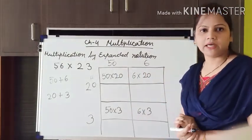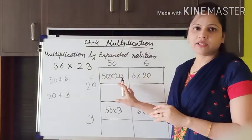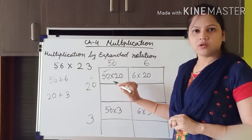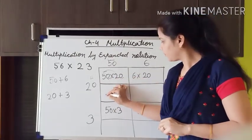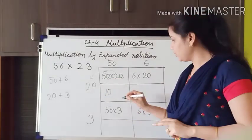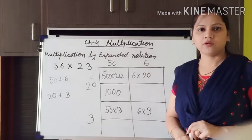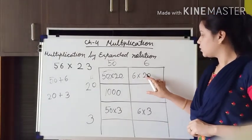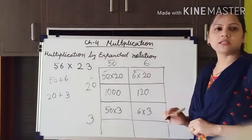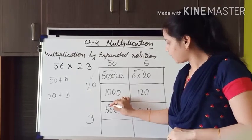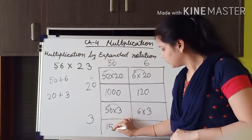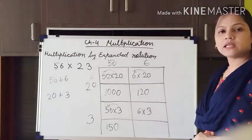As you can see, at the ones position there are zeros, so we just multiply the leading digits. 5 twos are 10, and there are 2 zeros, so we put 2 zeros: giving 1000. Next, 2 sixes are 12, and we put one zero at the end: giving 120. Then 3 fives are 15, and we put one zero: giving 150. And 6 threes are 18.